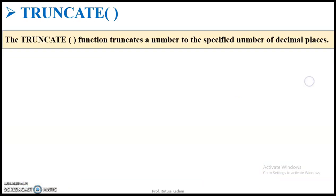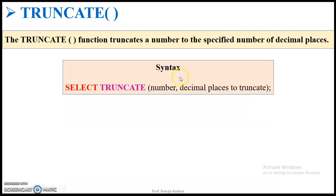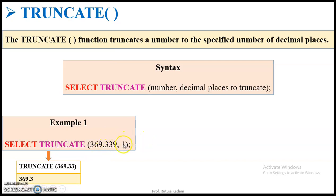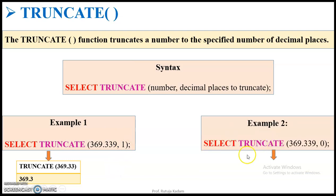Then comes the truncate function. The truncate function returns a number truncated to a specified number of decimal places. The syntax is: SELECT TRUNCATE(number, decimal_places). For example, SELECT TRUNCATE(369.339, 1) returns 369.3 — only one decimal place is displayed. If the second parameter is 2, the answer would be 369.33. For TRUNCATE(369.339, 0), zero decimal places gives 369.